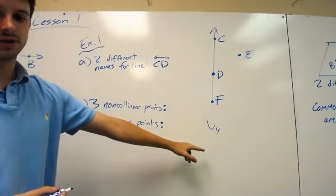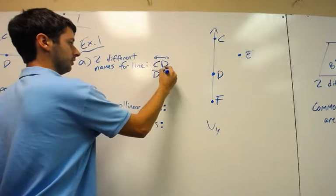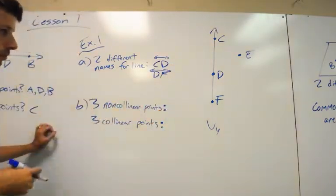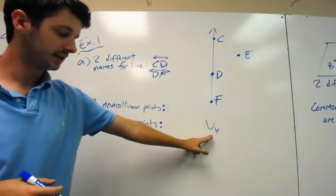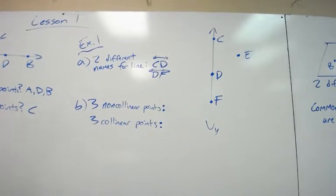Also, you could label it DF, you could label it FC, CF, whatever you wanted to do. There is one other way to label it. And that is with this lowercase letter here. We have a lowercase letter Y there. So you could refer to it as line Y.